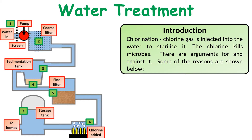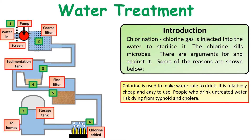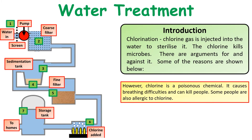The process of chlorination can come up quite often in exams, as there are arguments for and against it. Chlorine is used to make bleaches, plastics, and medicines, and to sterilize swimming pools. It makes water safe to drink and is relatively cheap and easy to use. People who drink untreated water risk dying from things like typhoid or cholera. However, chlorine is a poisonous chemical — it can cause breathing difficulties and can kill people. Some people are also allergic to chlorine.